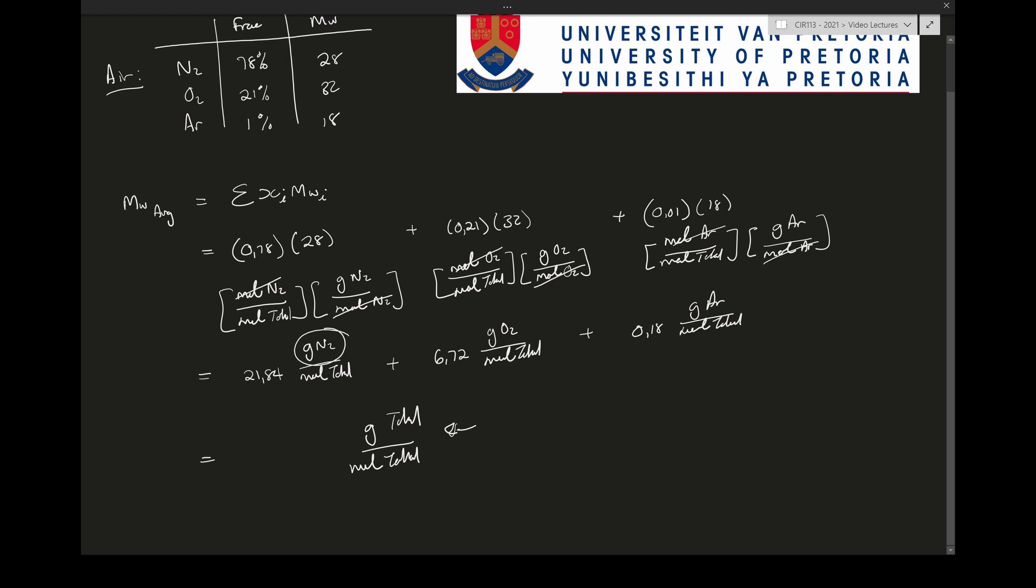We have the gram of the total thing divided by the moles of that thing, and in this case that is going to be gram air over mole air. Let's add all these values together, and we have 28.74 grams total over moles total, or 28.74 grams air over mole air, which will now be the average molecular mass for air.